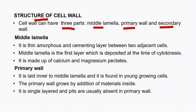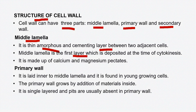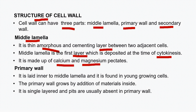Middle lamella is the thin, amorphous and cementing layer that is present between two adjacent cells. It is the first layer which is deposited at the time of cytokinesis, that is at the time of cell division. Middle lamella is made up of calcium and magnesium pectates.